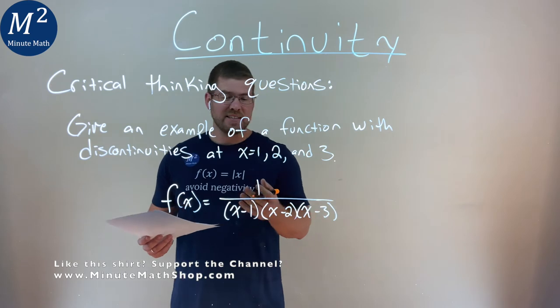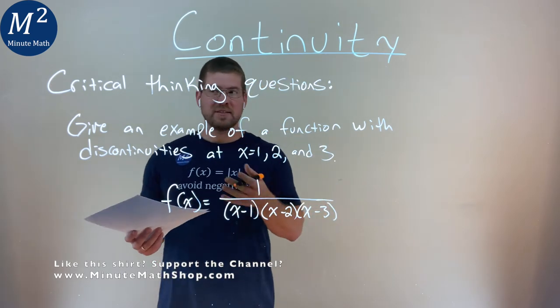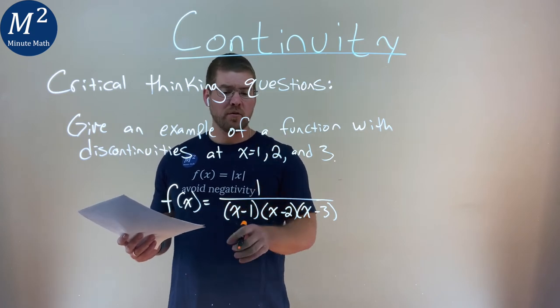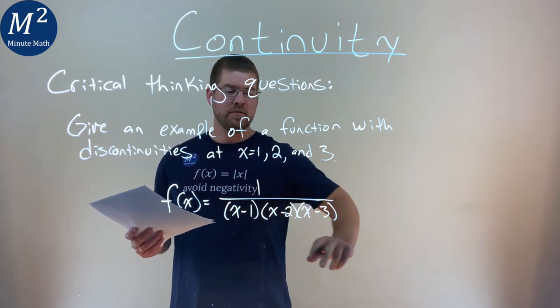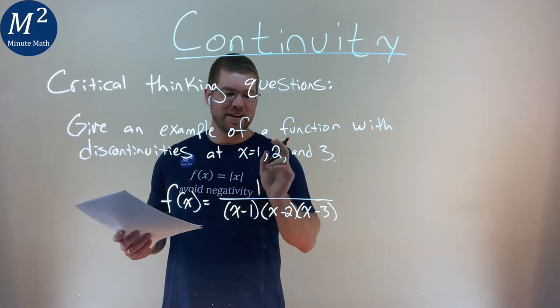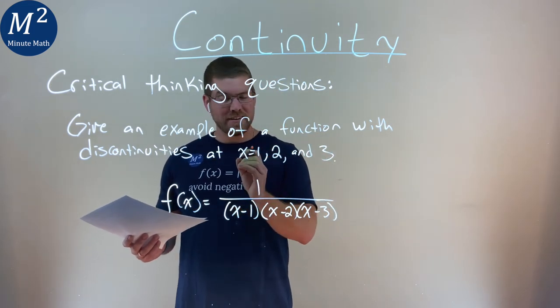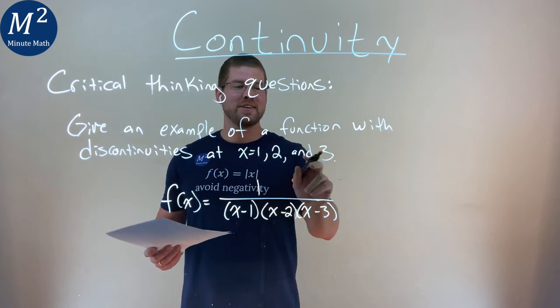And so, that's it. There are many answers for this function, but here's an example. f of x equals 1 over (x minus 1)(x minus 2)(x minus 3). This is an example of a function with discontinuities at x equals 1, 2, and 3.